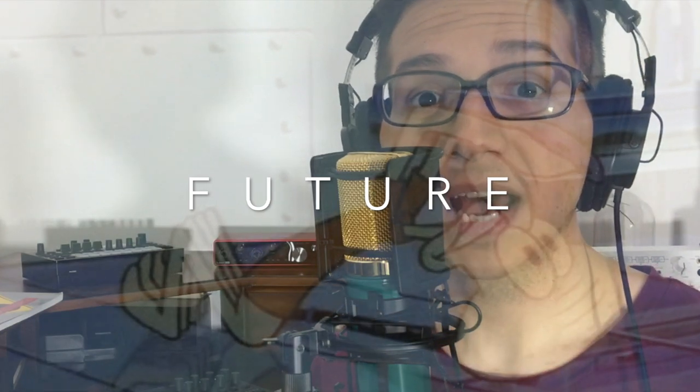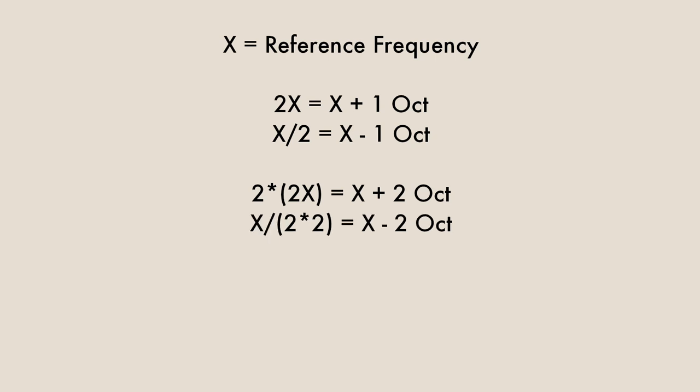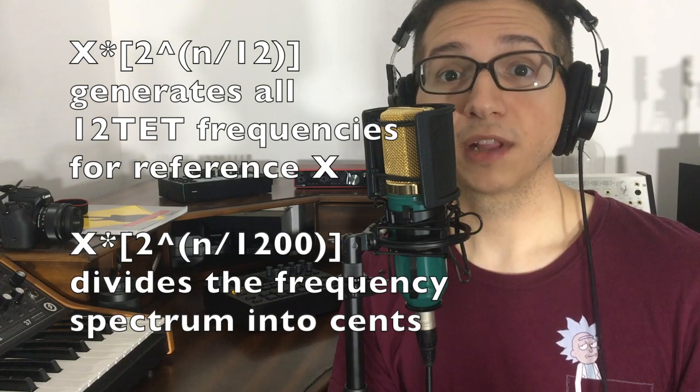Luckily, we live in the future, and with our future math, we can easily solve this problem that kept generations of instrument makers awake at night. If x is a reference frequency, 2x is an octave above, and x over 2 is an octave below. Because of octave equivalence, these are all experienced as the same note. Generalizing this, x times 2 to the n represents every appearance of this note, with n being the number of octaves above or below our reference. To get the other notes, just divide n by the number of notes you want in your scale — so for a 12-tone scale, we do x times 2 to the n over 12, where x is our reference frequency and n is the number of semitones above our reference. And just like that, we arrive at a tuning system that applies equally well in all keys.